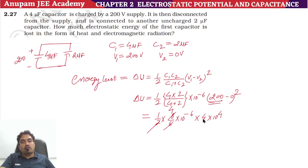2/3 times 4 times 10 to power minus 2. Solving this, we get 8/3 times 10 to power minus 2 joules. This is our answer.